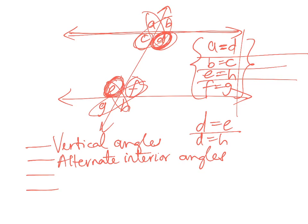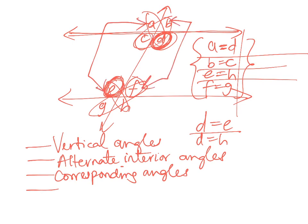Then there's something called corresponding angles. Corresponding angles. And that would be situations like A and E, A and E and B and F. Those are corresponding angles. So we have corresponding angles, alternate interior angles, and vertical angles.